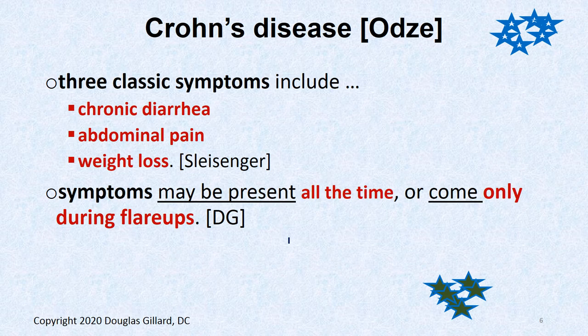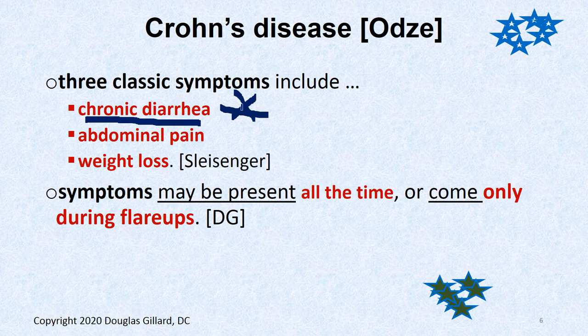There are three classic symptoms. First, chronic diarrhea — almost all patients with Crohn's disease have chronic, watery diarrhea; this is the gold standard symptom. Bloody diarrhea makes you think more of ulcerative colitis. Second, abdominal pain of varying intensities — bad enough to send them to the ER if obstruction occurs. Third, weight loss, because they don't want to eat. Malnutrition is also common. These symptoms are constant in some patients and only appear during flare-ups in others.